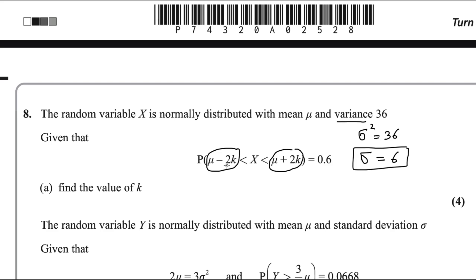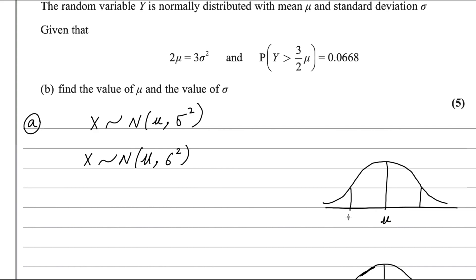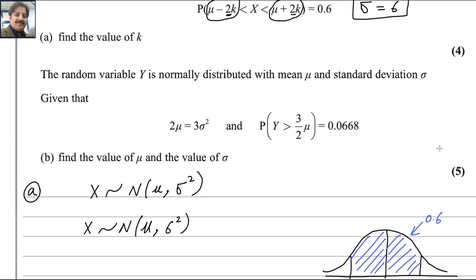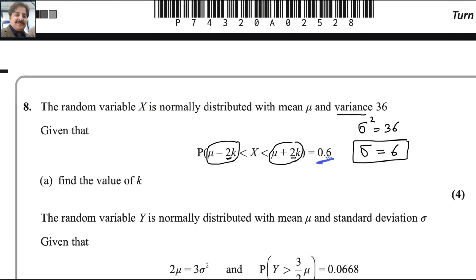Here, 2k is subtracted from mu and 2k is added to mu — the same value is subtracted and added to the mean symmetrically. So mu minus 2k is written on the left side and mu plus 2k on the right side. The area between these two values is 0.6, as given in the question.